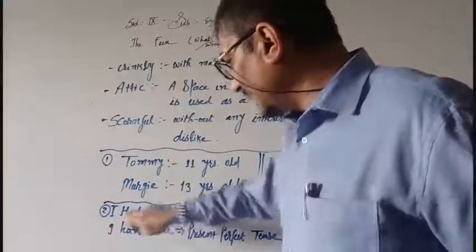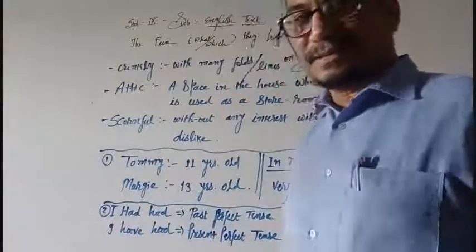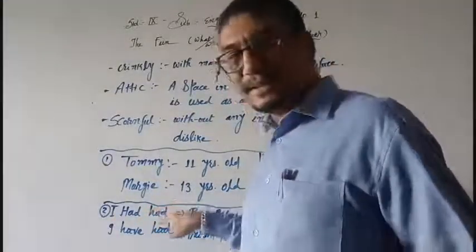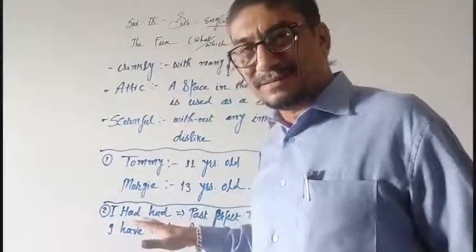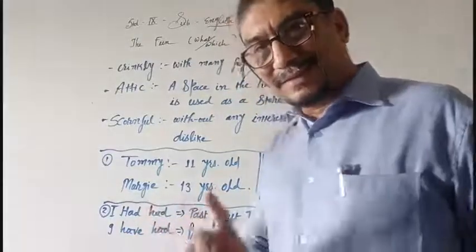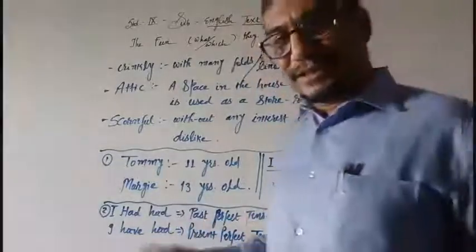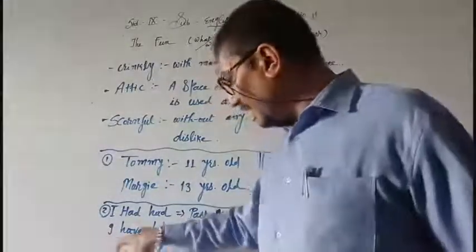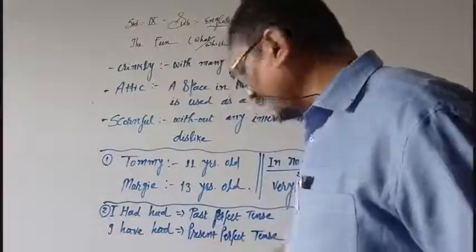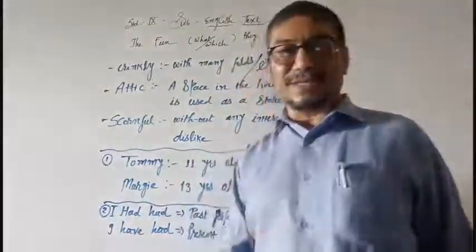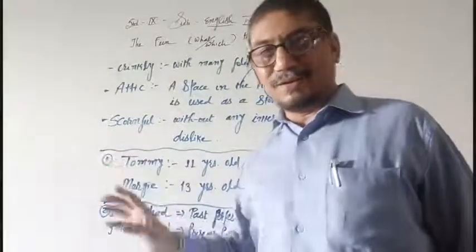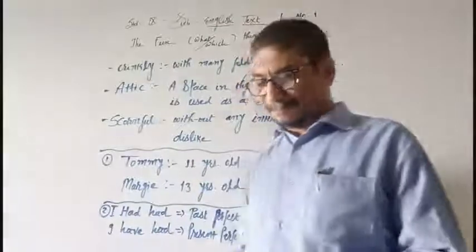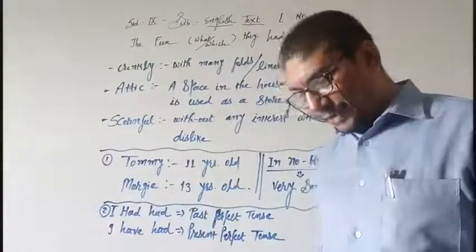I had had, it had had, whatsoever it is written. This is not the printing mistake. Had had two times, twice it is written here. This is the identity of past perfect tense. In the same way, if it is next, it comes that is I have had, that is present perfect tense. This is not a printing mistake. Past perfect tense.